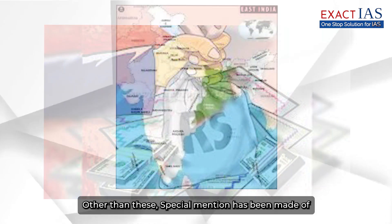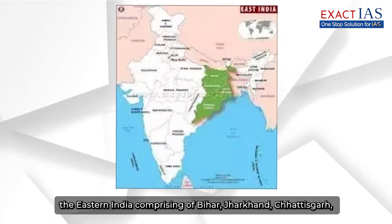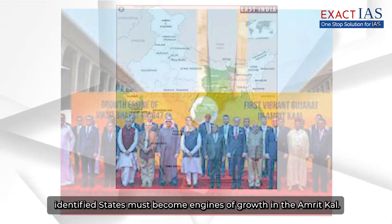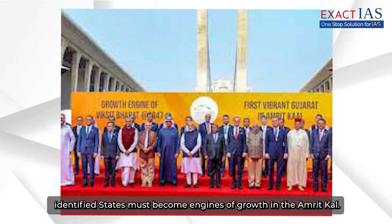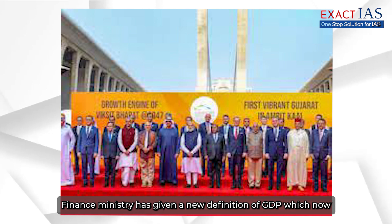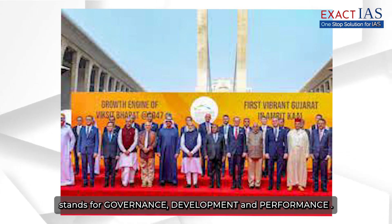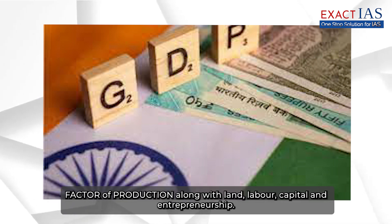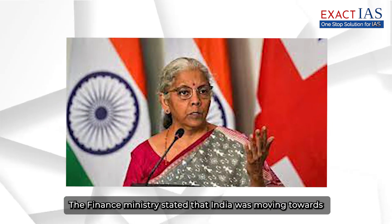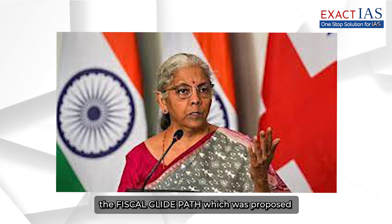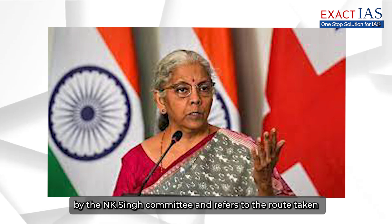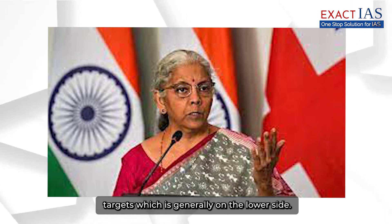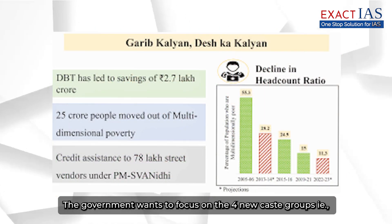Special mention has been made of eastern India — comprising Bihar, Jharkhand, Chhattisgarh, Odisha, and West Bengal — as the Finance Minister stated these states must become engines of growth in the Amrit Kaal. The Finance Ministry has given a new definition of GDP, which now stands for Governance, Development and Performance. Digital Public Infrastructure or DPI has been called the fifth factor of production, alongside land, labour, capital, and entrepreneurship. The Finance Ministry stated that India was moving towards the fiscal glide path, proposed by the NK Singh Committee, referring to the route taken by the Finance Ministry to meet its self-set fiscal targets.